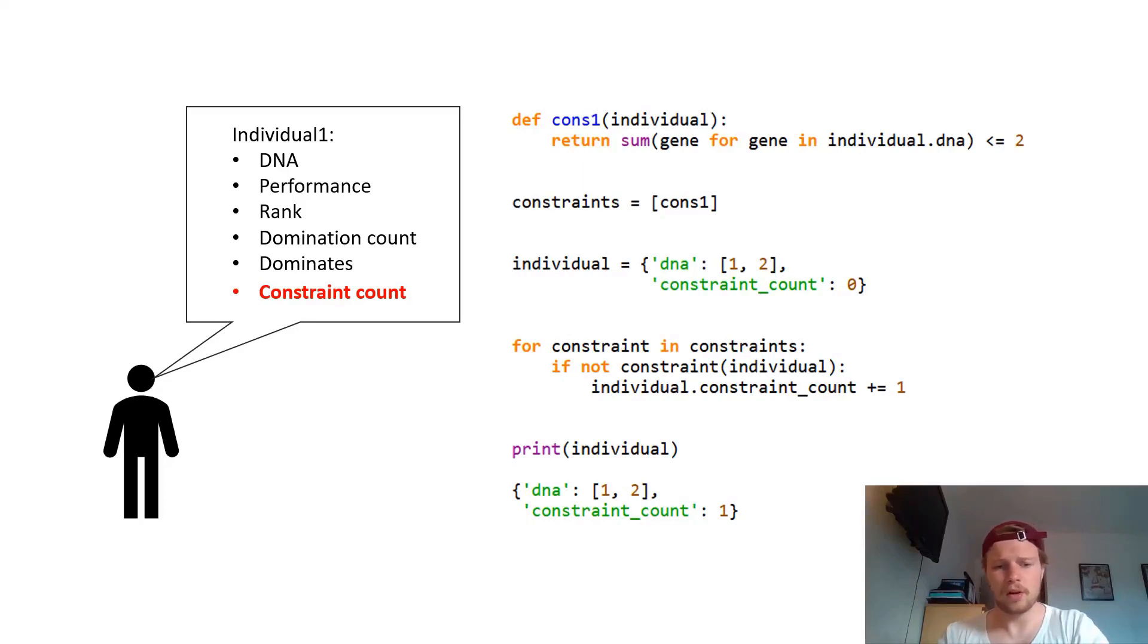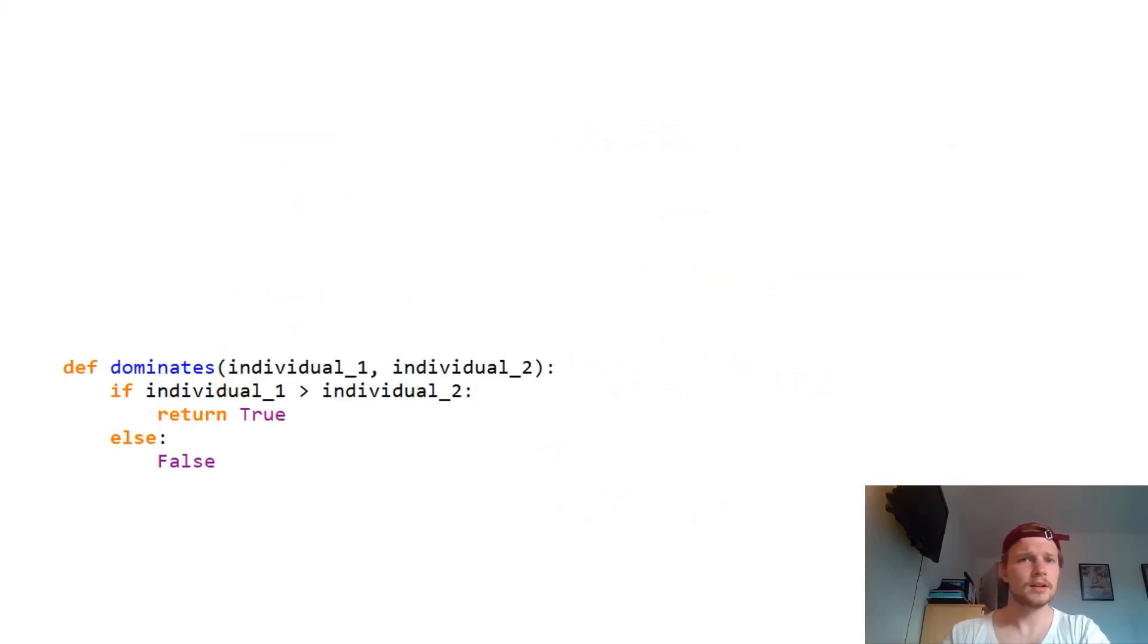But to find all Pareto optimal solutions now, we always check which individuals aren't dominated by others by comparing the performance of the different target indicators with each other. This is the normal process of NSGA2. This function was already explained in the last video. So if I have two individuals, I look at the performance of the target indicators and I'm looking if one or both are better or equal. And if this is the case, I return a true. Otherwise, it's dominated by the other individual.